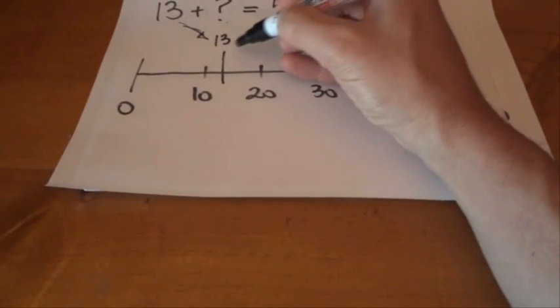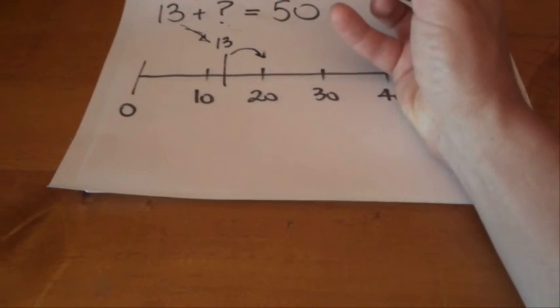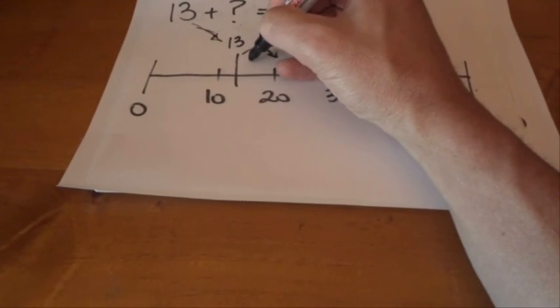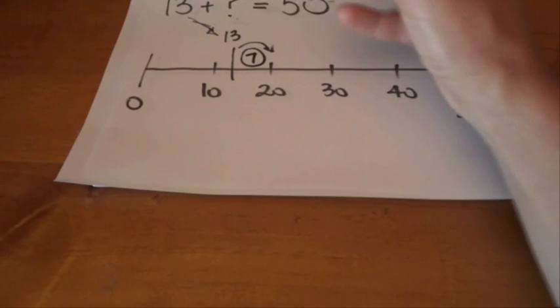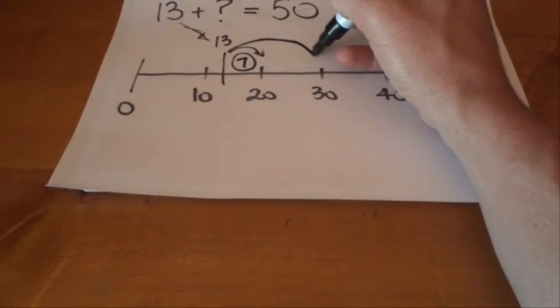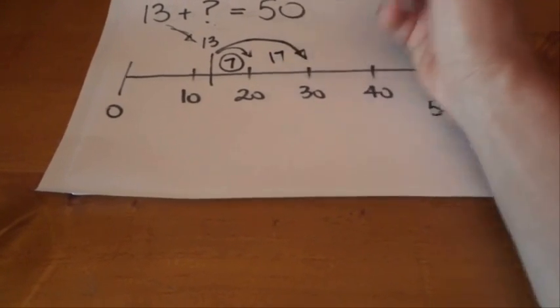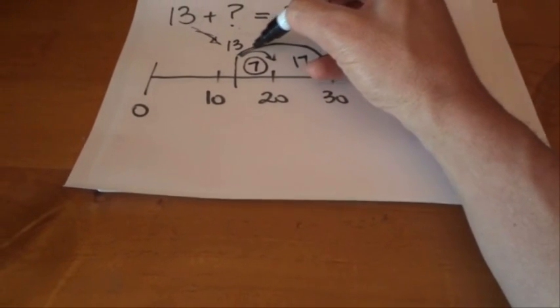So 13 plus what gives you 20? Well, the answer's 7. Then 13 plus what gives you 30? 17. Just add on 10.